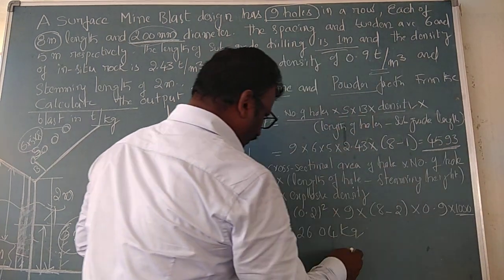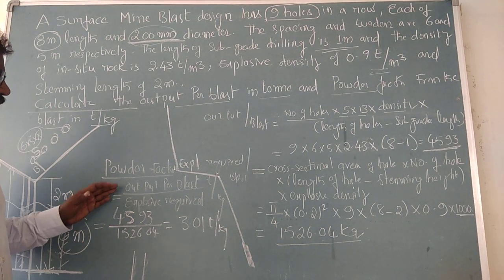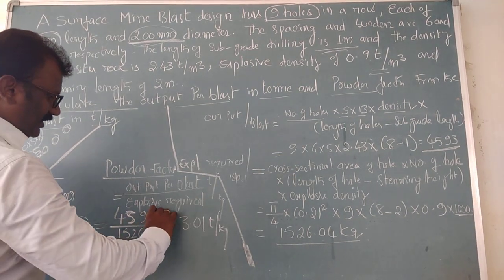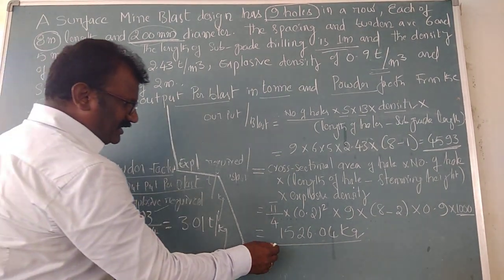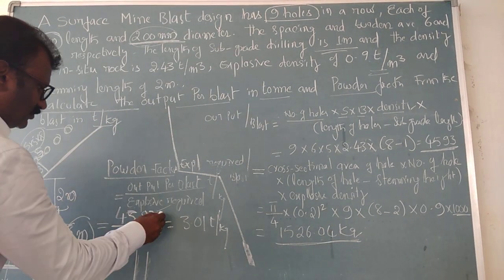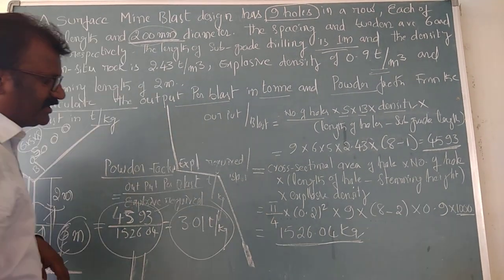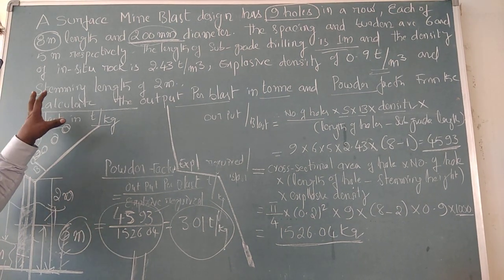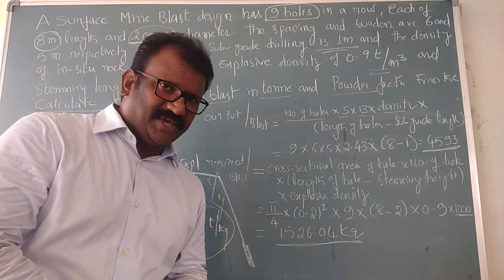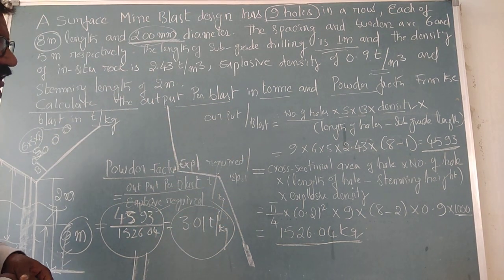The output for the blast comes to 4393 tons, and explosive required is 1526.04 kg. Therefore, the powder factor for this blast design is 3.01 tons per kg.